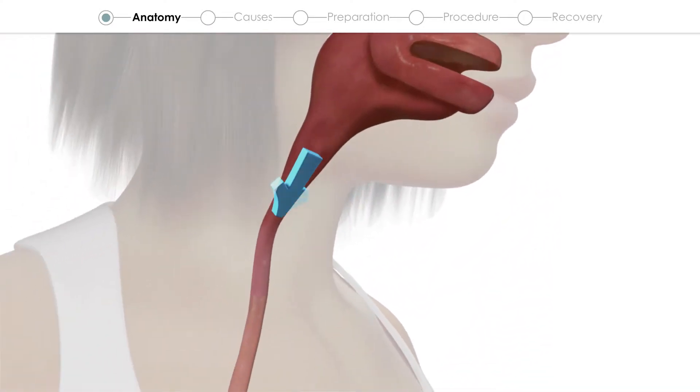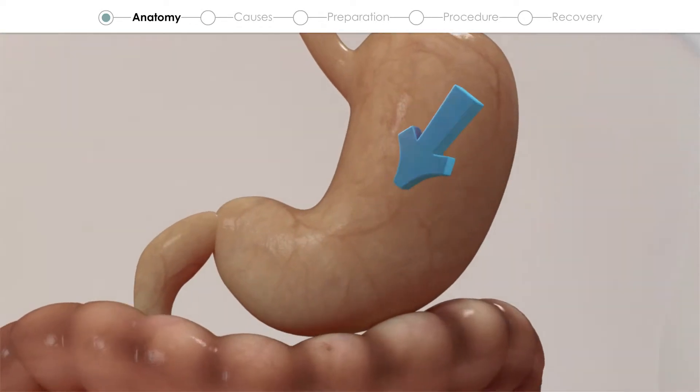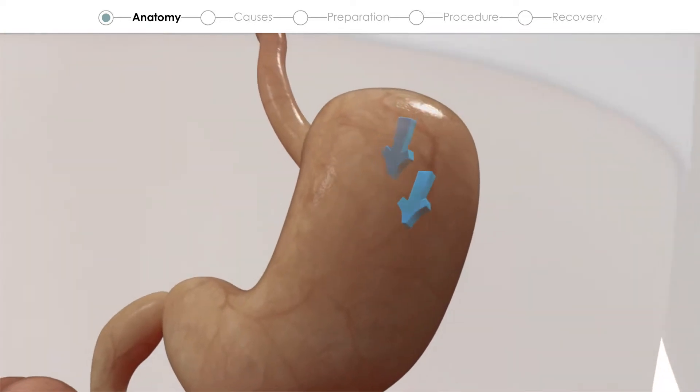The esophagus channels food into the stomach, where the digestive process begins, before it enters the first part of the small intestine.